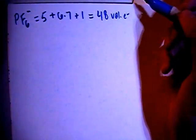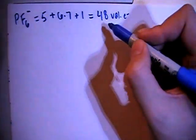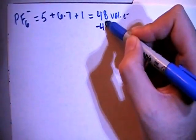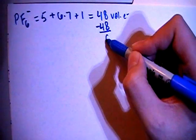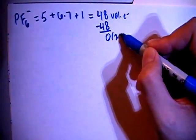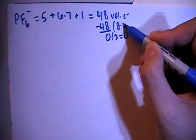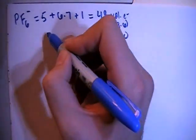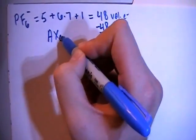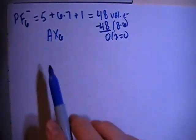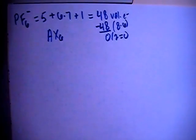And we can go ahead and subtract out the largest multiple of 8, which is going to be 48 in this case, which leaves us with 0. Divide that by 2, it's still going to be 0. And 48 is equal to 8 times 6. So that means that this is going to be an AX6 structure, meaning central atoms surrounded by 6 peripheral atoms.